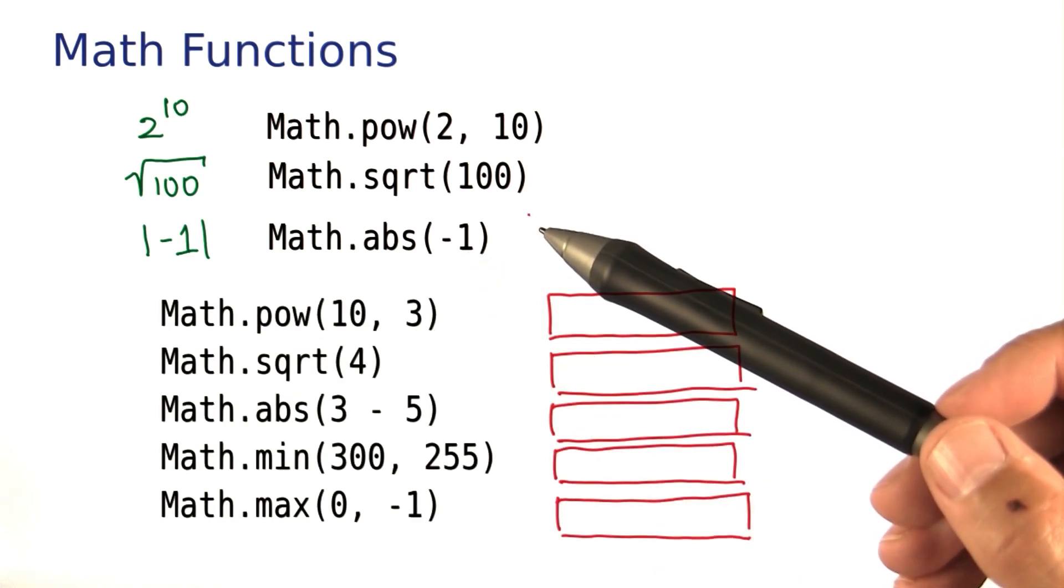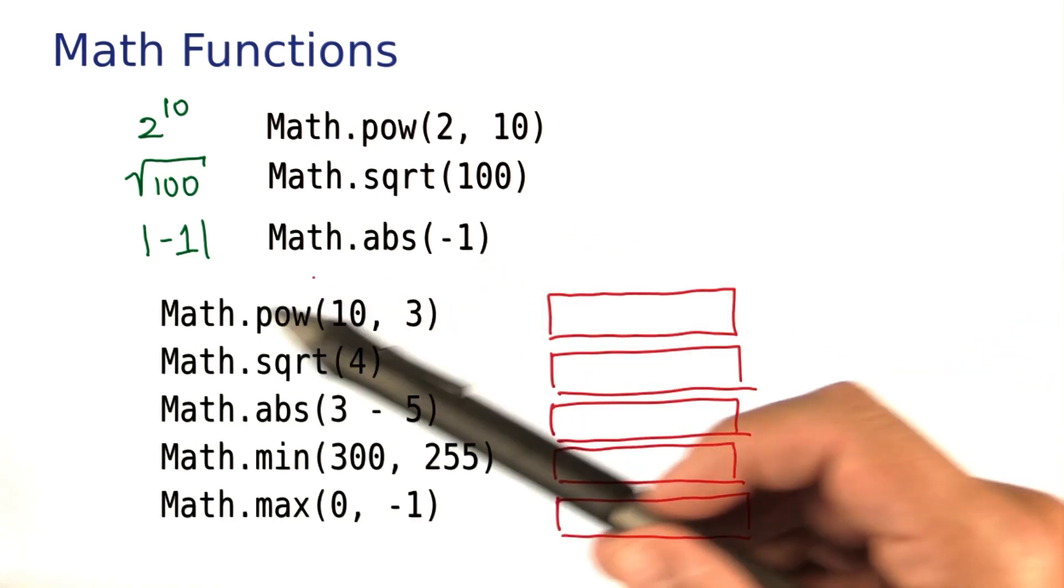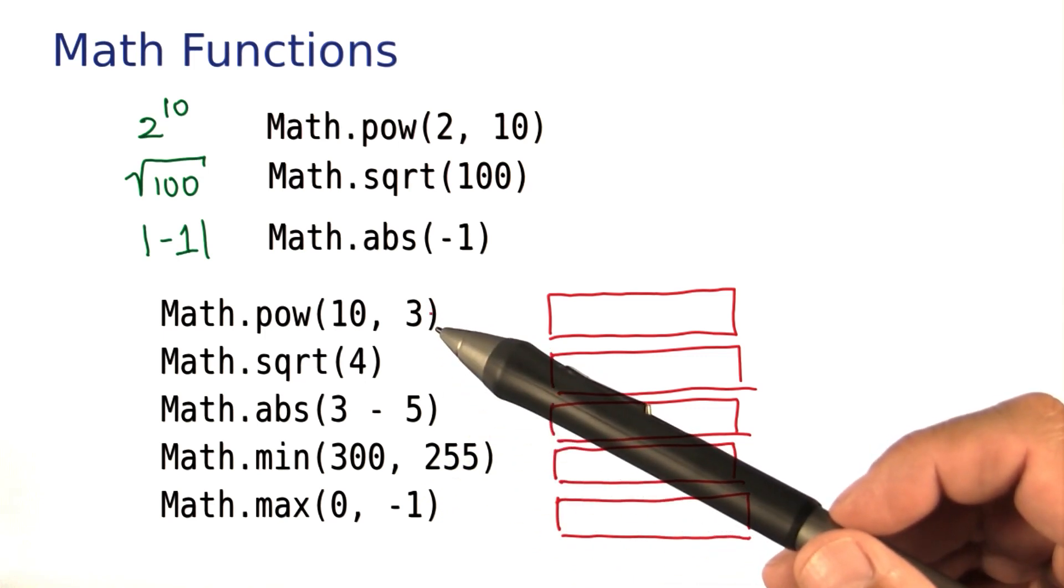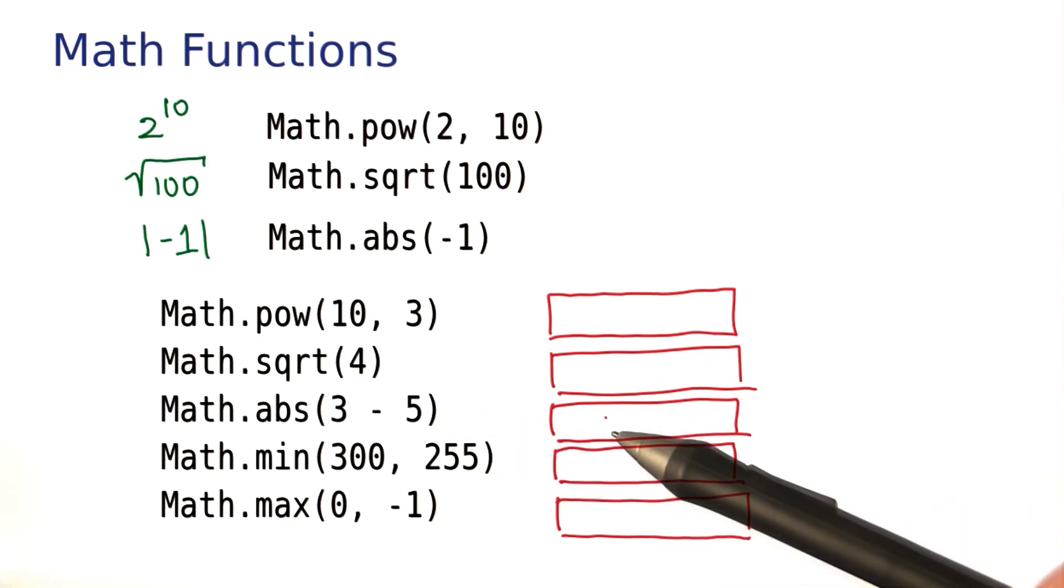These kinds of functions come up often enough that I want you to practice this a little bit. Here, I have a bunch of function calls, and I'd just like you to tell me, for each of them, what is the result? If you like, you can compute it in BlueJ, or you can just do it in your head.